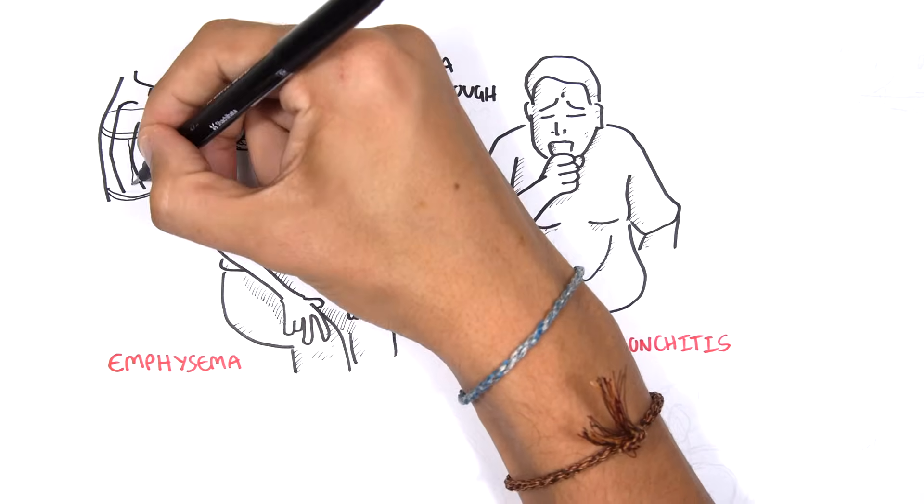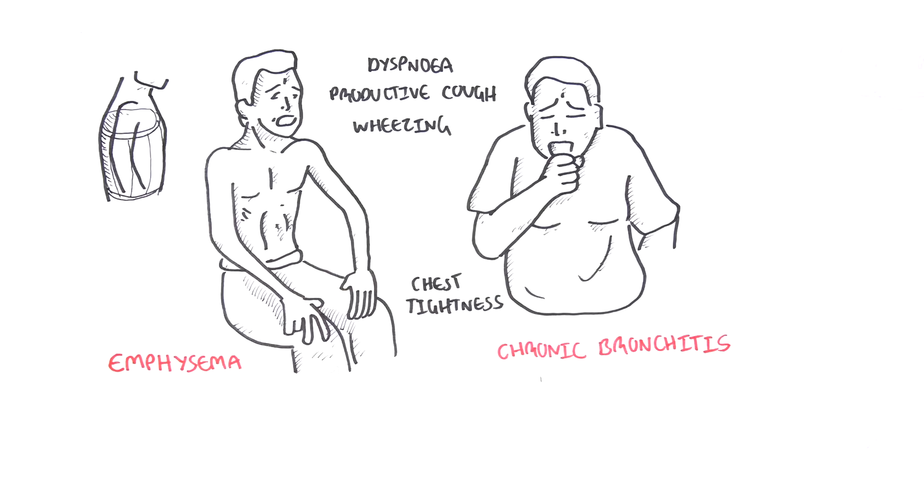Patients with pure emphysema have a barreled chest, muscle wasting, as well as pursed lips.